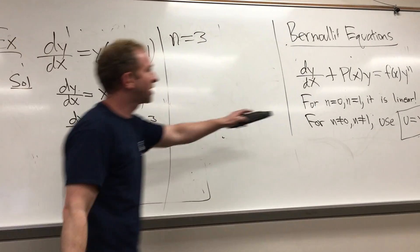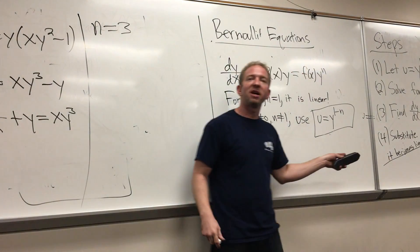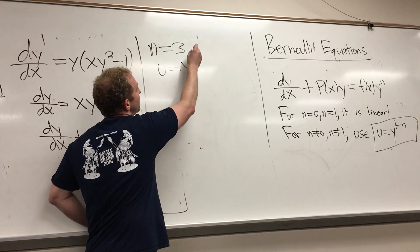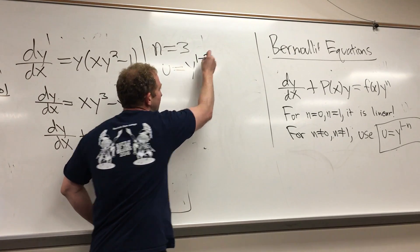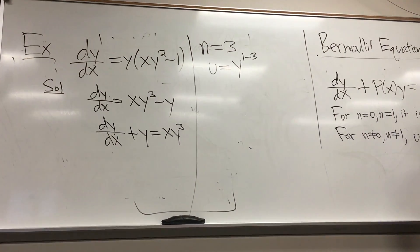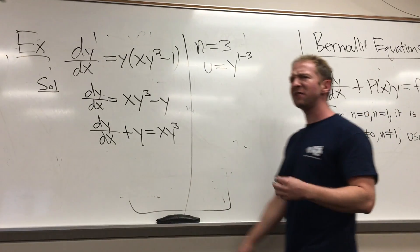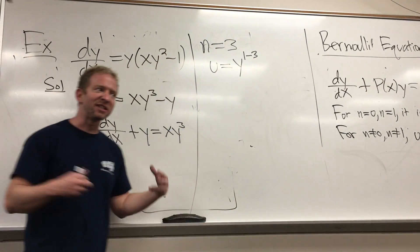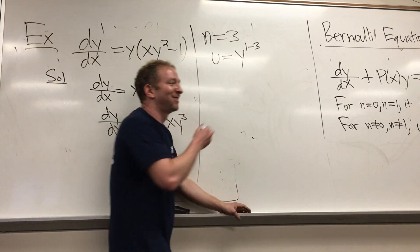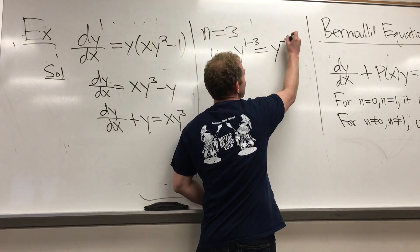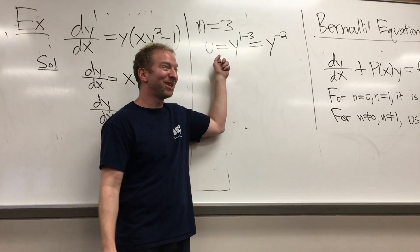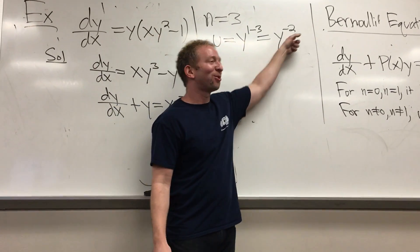Step one: work out u = y^(1 - n). So u = y^(1 - 3), which is y^(-2). Bernoullis are fun — it's 1 minus n. So u equals y to the negative 2.